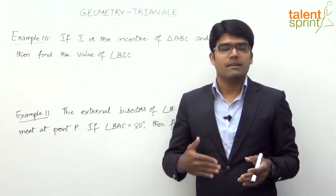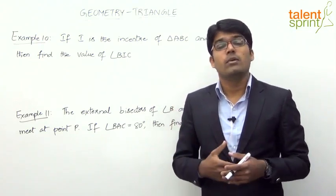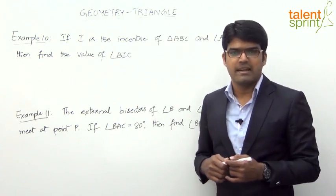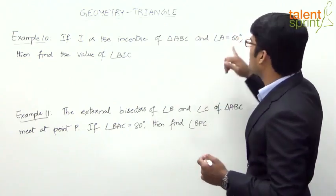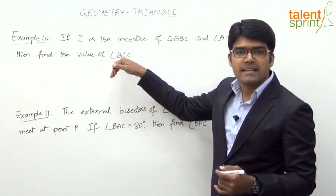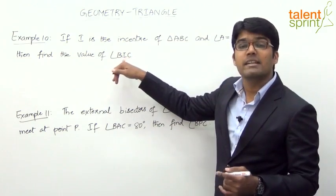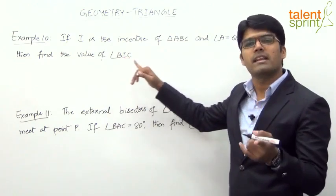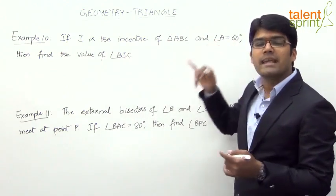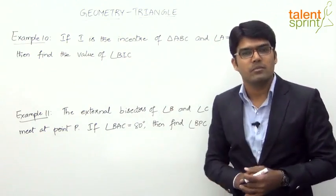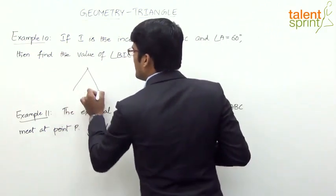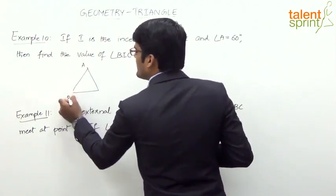The key point is that the angle made by any side with the incenter will be equal to 90 degrees plus half of the vertical angle. So for side BC, the angle made with the incenter is 90 degrees plus half the vertical angle. The vertical angle for side BC is angle A, and half of angle A is 30 degrees, so 90 plus 30 equals 120 degrees — that is the answer.